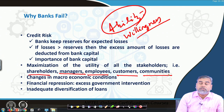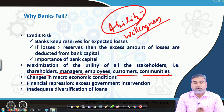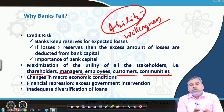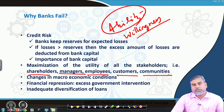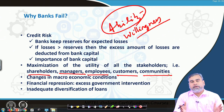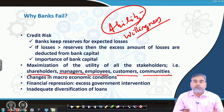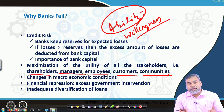Inadequate diversification of loans is another reason for failure. Sometimes loans are concentrated in a particular segment, industry, or entity. If something goes wrong with that particular industry, recovery becomes relatively difficult. That is why loans should be diversified across industries, different types of loans, and different maturities. If loans are concentrated and something goes wrong, the bank can compensate losses from another segment by recovering loans given elsewhere.